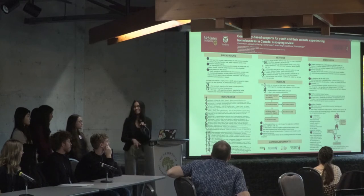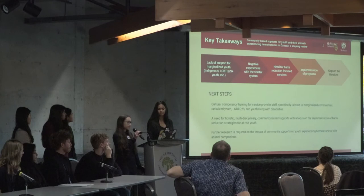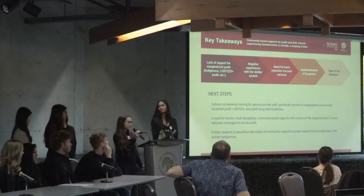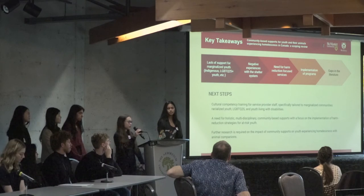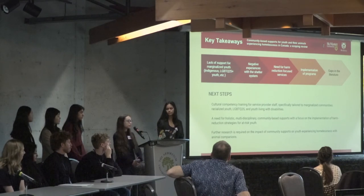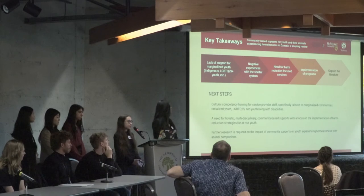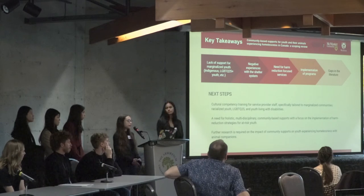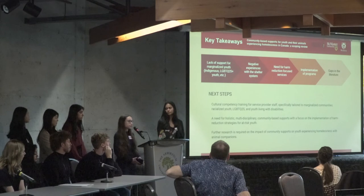In terms of our findings, we conducted thematic analysis and our top three themes were the lack of support for marginalized youth, negative interactions with the shelter system, and a lack of harm reduction focused services which help to prevent homelessness. Additionally, we found that only eight sources outlined real strategies that have already been implemented across Canada to combat youth homelessness. Finally, we only found two out of 56 articles that analyzed youth facing homelessness with animal companions, which was our large focus of the scoping review.